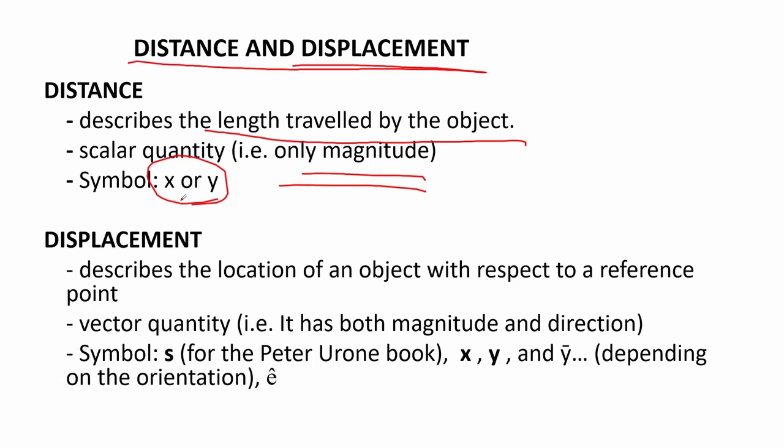Displacement, on the other hand, describes the location of an object with respect to a reference point. It is a vector quantity which means having both magnitude and direction. Its symbol is usually a bold letter, a letter with a hat on top, the bar looks like an arrow on top.